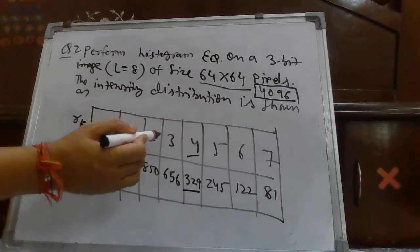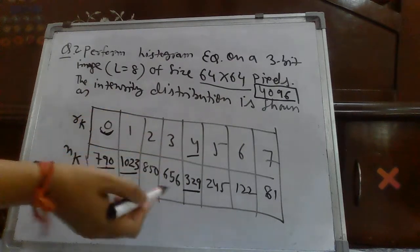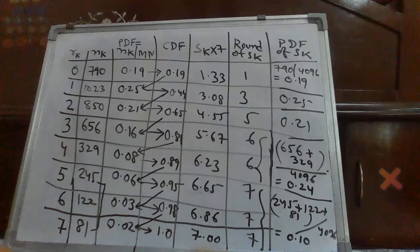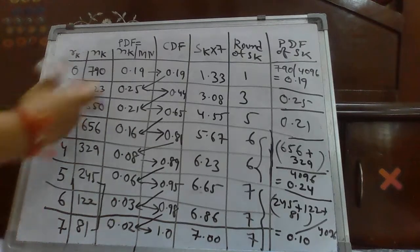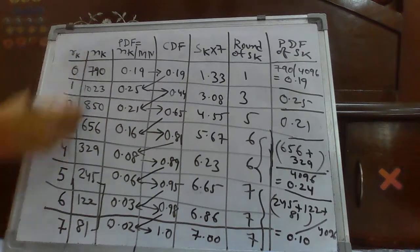So, same way as we did in the first question, we will try to see the equalized histogram of this image. Now, let's see the solution of these questions. Same way we have drawn the table.